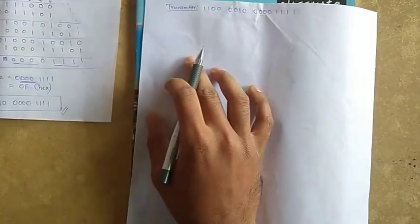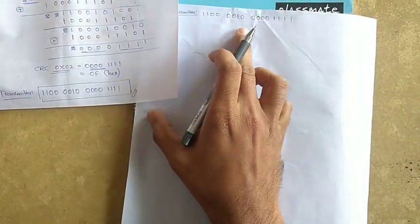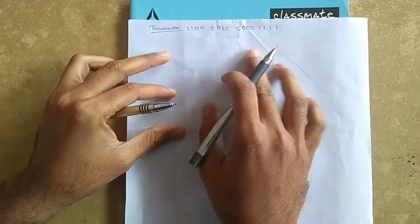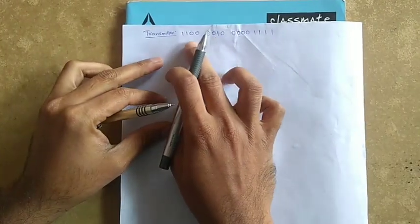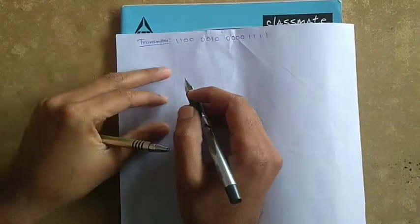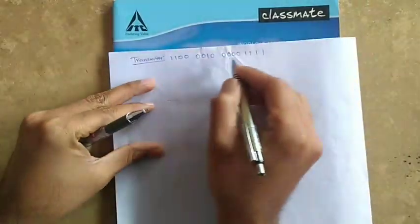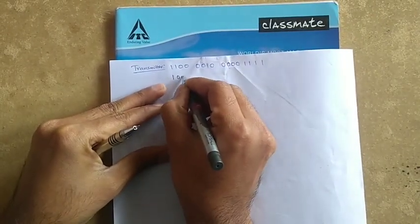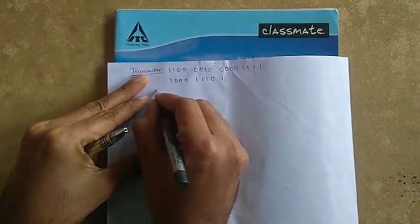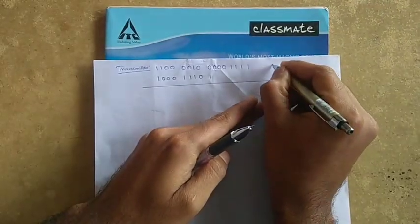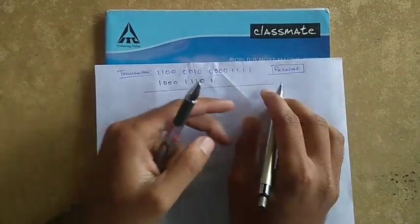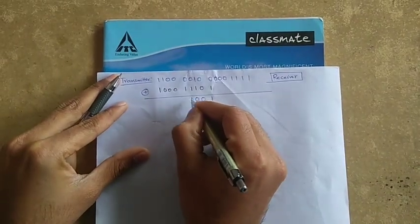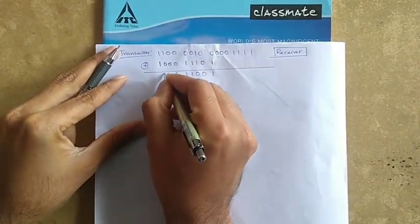Now in the receiver, how do we ensure that the bits are successfully transmitted? We use the same technique — we divide this number (C2 followed by the CRC value) by using the polynomial. The polynomial rule is the same: we start aligning from the 1. So for the receiver section, simply an XOR: 1, 0, 0, 1, 1, 0, 0, 1, 0.